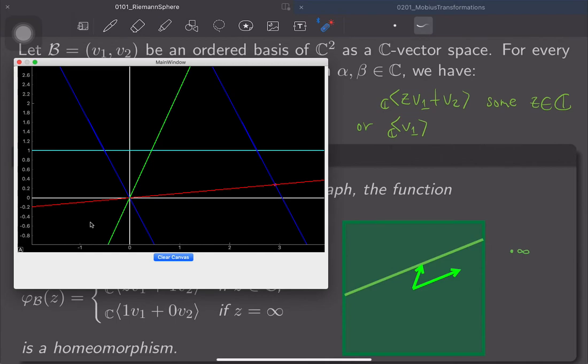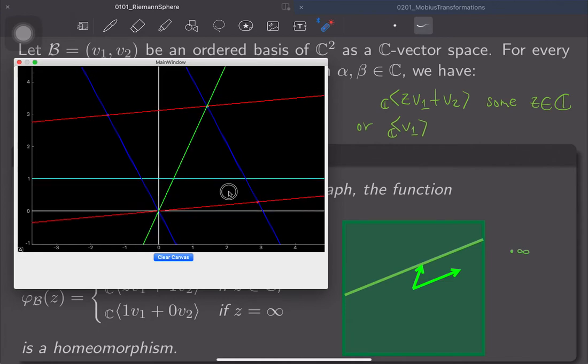Now, and of course, for each one-dimensional complex vector subspace, I see only kind of the shadow that lives in this real part times real part. But then, let's, I'm going to move. You see, this green line really is the intersection of a one-dimensional complex vector subspace with this real part times real part.